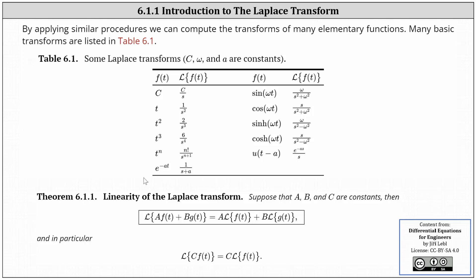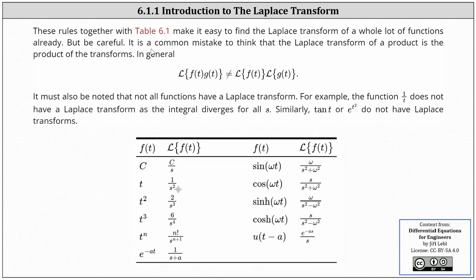Linearity is also helpful when determining Laplace transforms. Linearity of the Laplace transform states: suppose a, b, and c are constants. Then the Laplace transform of a times f of t plus b times g of t equals a times the Laplace transform of f of t plus b times the Laplace transform of g of t. In particular, the Laplace transform of c times f of t equals c times the Laplace transform of f of t. These rules together with the table make it manageable to find the Laplace transform of many functions.